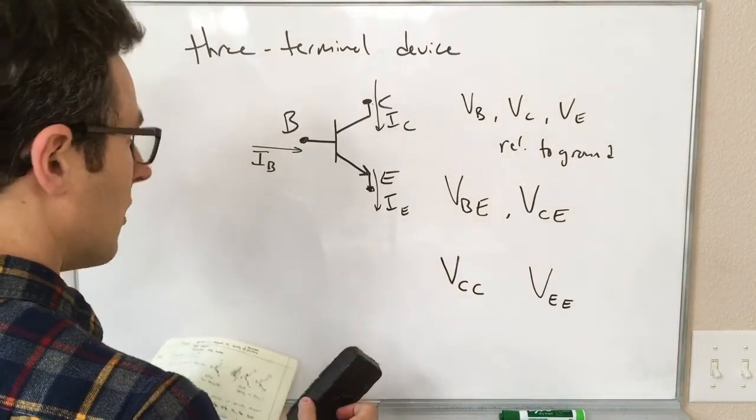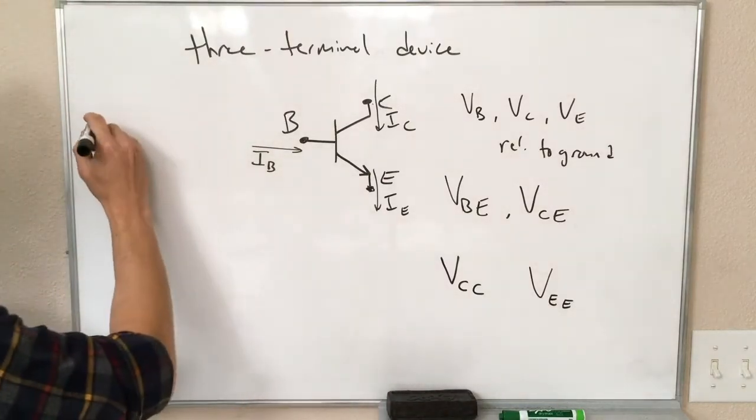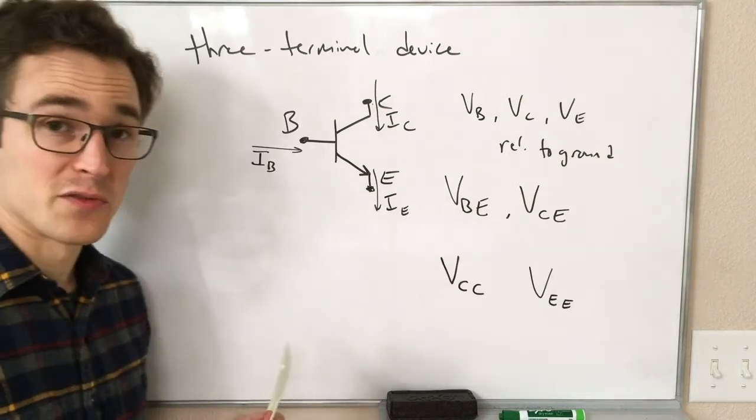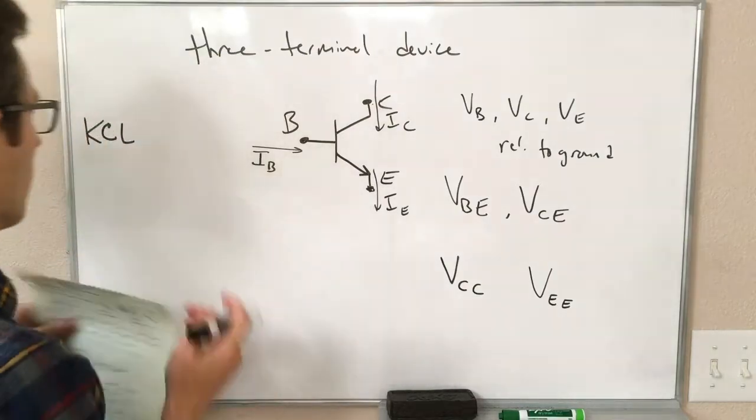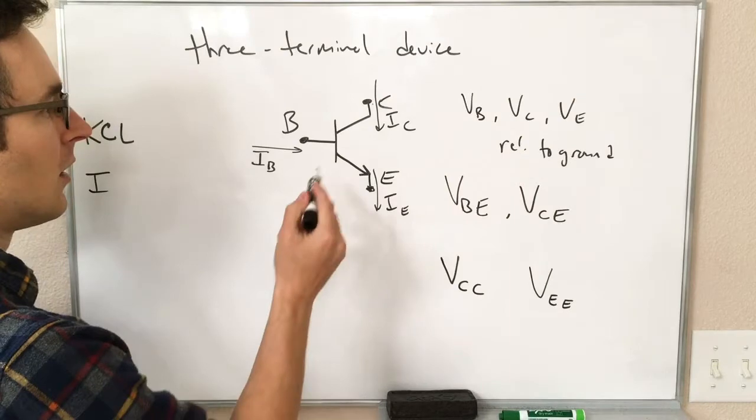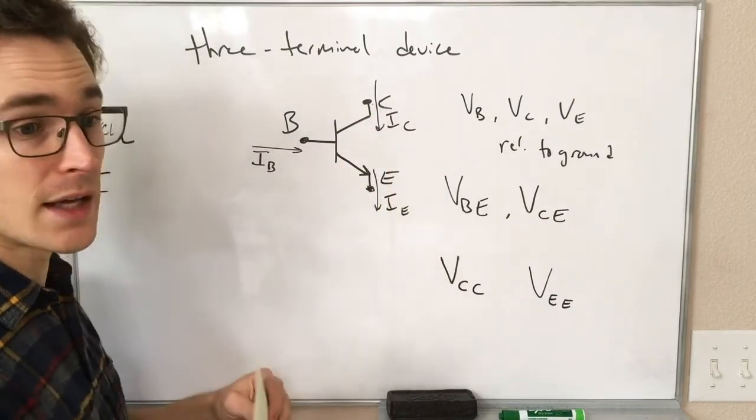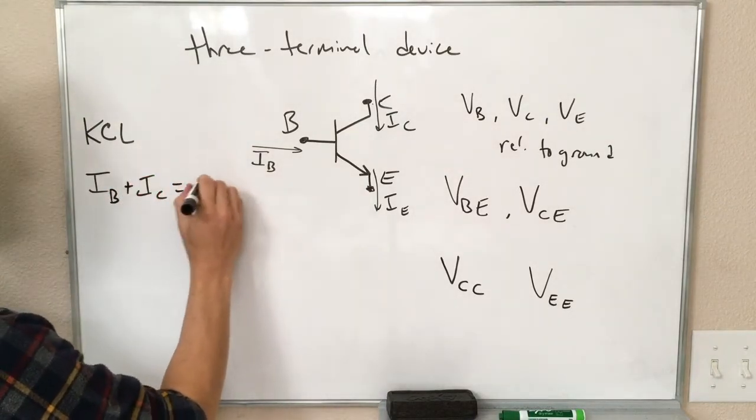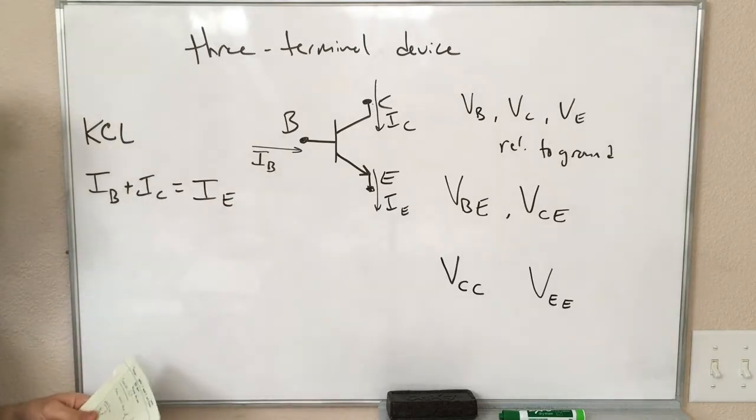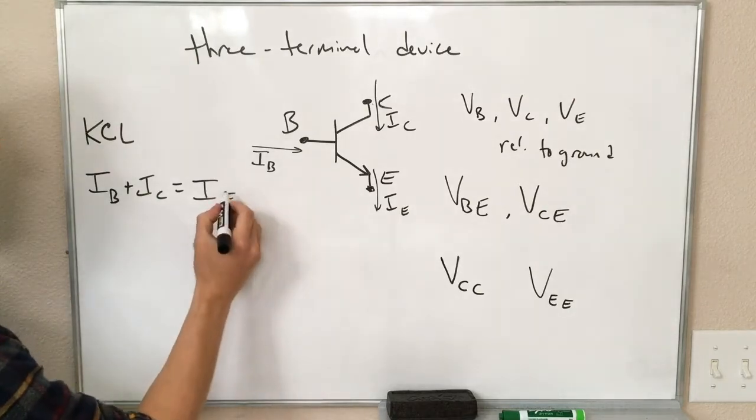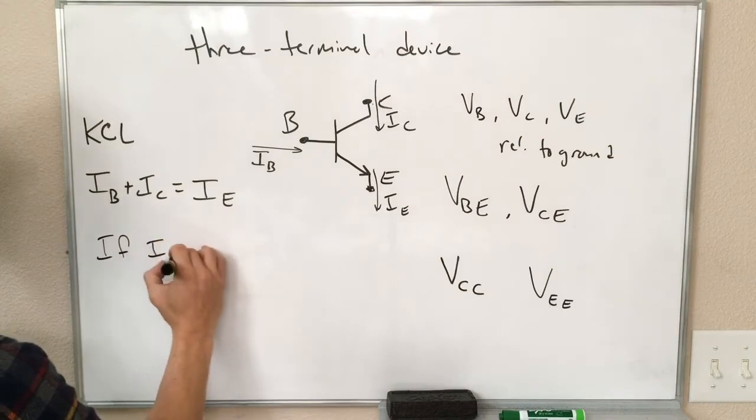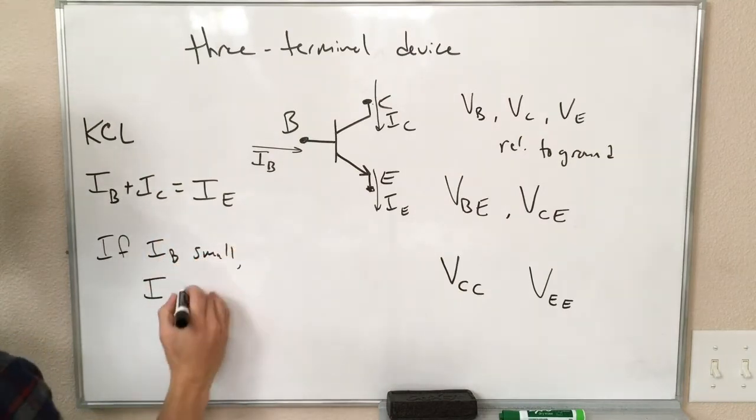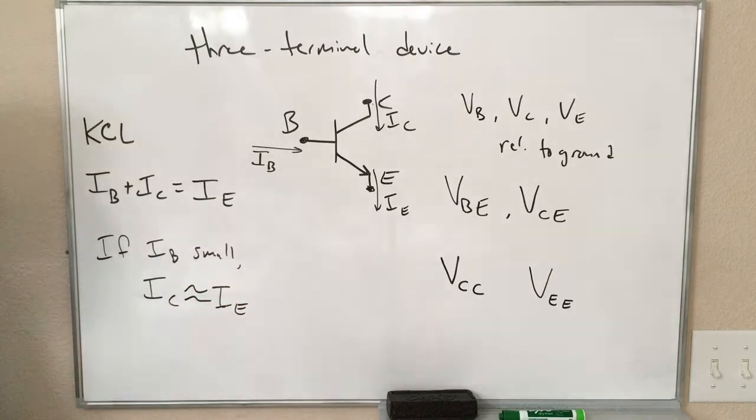One other thing we can use, just real quickly, is Kirchhoff's current law. Our transistor conserves charge, just like everything else in the universe. We put current in the base and current in the collector. That same amount of current has to come out the emitter. Or, in other words, it's like doing Kirchhoff's law with this whole thing as a node, right? The current into that node equals the current out of the node. IB plus IC is equal to IE. And that's just conservation of current. It is often the case, as we will see, that the base current is much smaller than either of those two. If the base current is small, then the collector current is approximately equal to the emitter current. And that's going to be a useful approximation for us to make once we start analyzing these things.